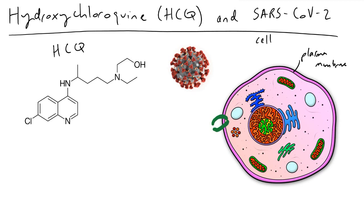Inside of your cells you have things called lysosomes, which are these little red and orange dots here. The job of these lysosomes is to break down proteins, and they need a low pH — a very acidic environment — in order to do this. What hydroxychloroquine does is accumulate inside of these lysosomes, and when it does this, it has the effect of basically down-regulating the activity of these lysosomes.